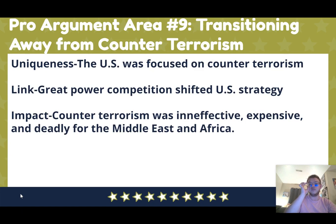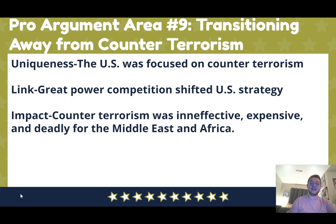The ninth pro argument area is transitioning away from counterterrorism. Great power competition is good because it ended the U.S. counterterrorism strategy. The impact is all the reasons counterterrorism was a bad strategy — it didn't work, was expensive, killed millions of innocent people, and hurt relationships with other countries. This is a strong argument especially because con arguments won't directly disprove it, and you can impact it to show the harms of the previous strategy made the transition worthwhile.